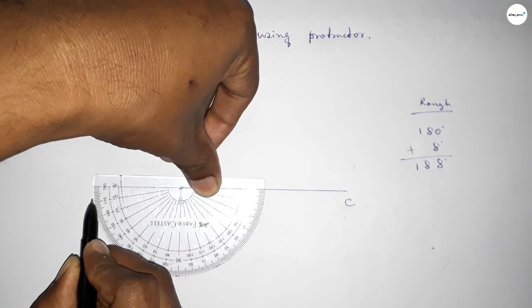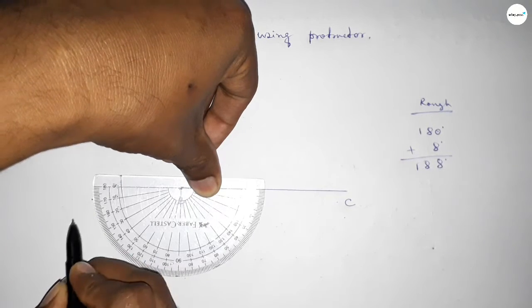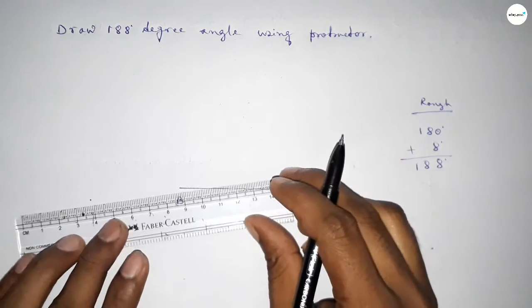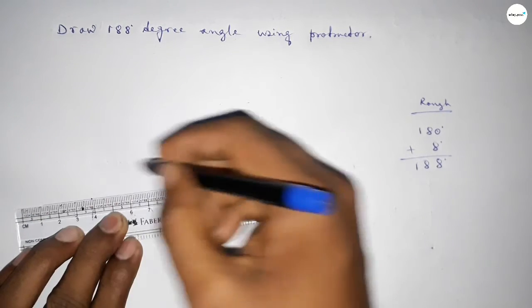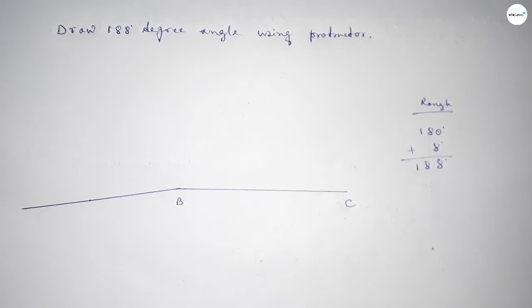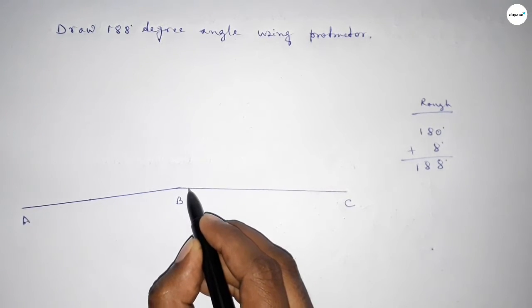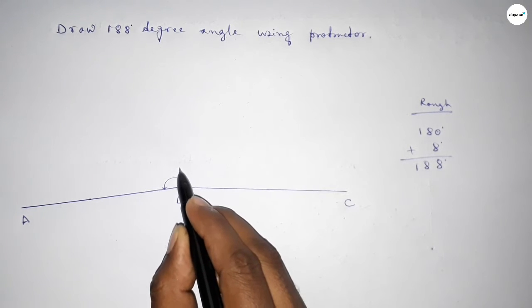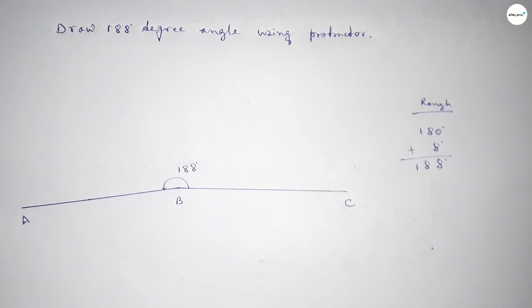So by adding 8 degree angle with 180 degree, then we can get 188 degree angle. Now joining this line to get 188 degree angle and taking here a point. So angle ABC up to this, this is 188 degree angle.